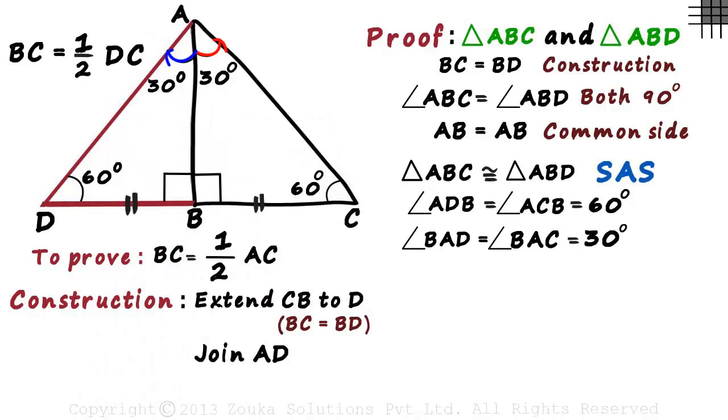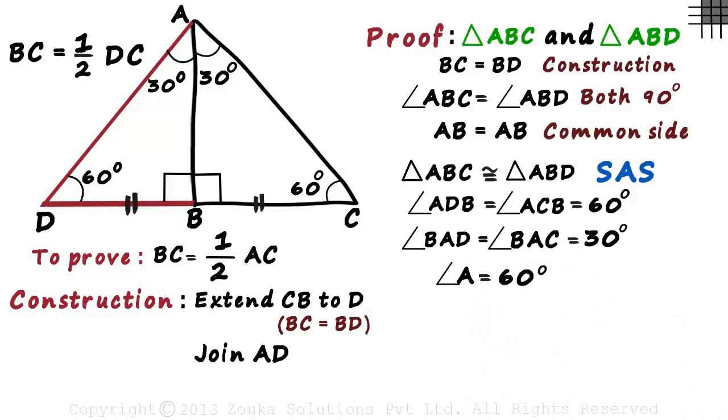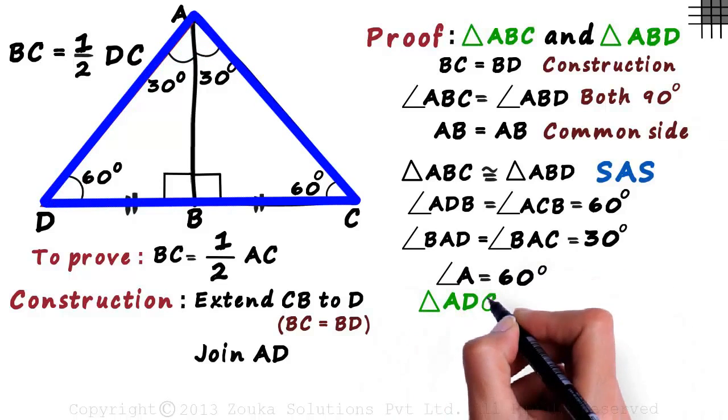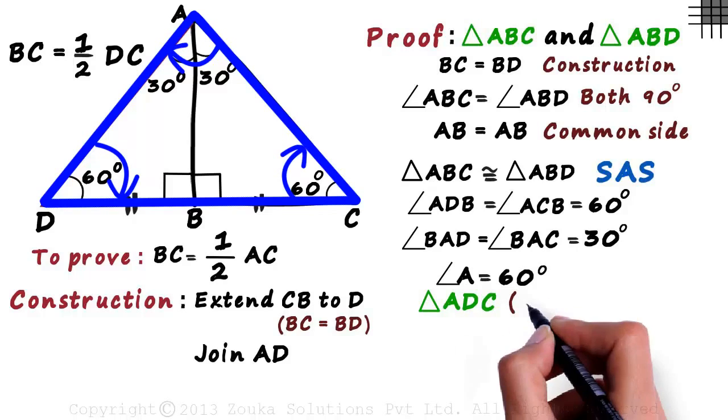Both these angles together form angle A. So we get the measure of angle A as 60 degrees. Now look at triangle ADC. As all three angles equal 60 degrees, we can say that triangle ADC is equilateral.